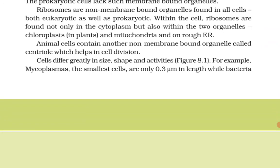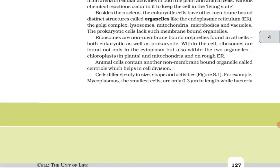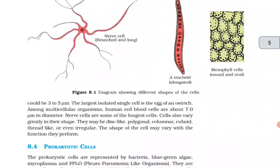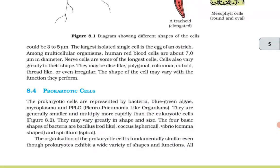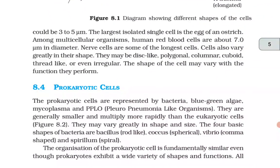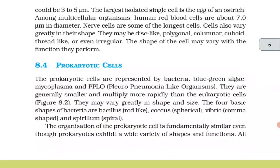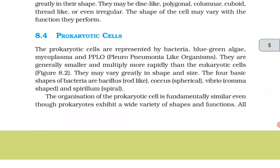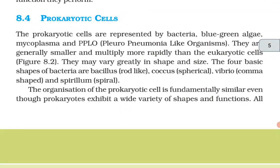Cells differ greatly in size, shape, and activities. For example, mycoplasmas, the smallest cells, are only 0.3 micrometers in length, while bacteria could be 3 to 5 micrometers. The largest isolated single cell is the egg of an ostrich. Among multicellular organisms, human red blood cells are about 7 micrometers in diameter. Nerve cells are some of the longest cells. Cells also vary greatly in their shape — they may be disc-like, polygonal, columnar, cuboid, thread-like, or even irregular.